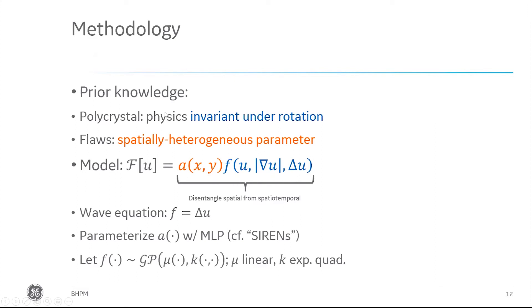Moving on to what this means in the context of the microstructure problem, I want to build a few things into that physics model. First, I'm working with data from a polycrystalline metallic specimen, so I want our physics to be invariant under rotation. Second, these specimens are going to have flaws or surface-breaking cracks, so I want to allow for the physics to be spatially heterogeneous in a way that maps to some unknown field parameter. We write it by decomposing the operator F like this: on the left, we've got this parameter A which depends on space, X and Y coordinates, and then this global physics operator F that depends on U, magnitude of the gradient of U, as well as its Laplacian.